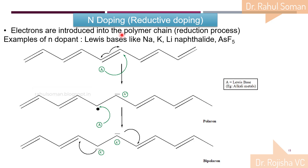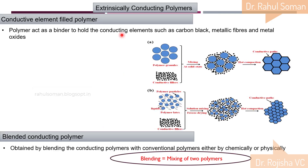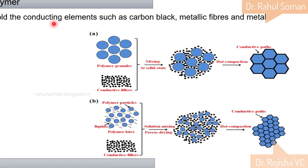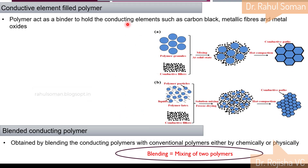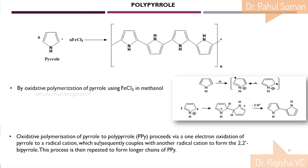So doping can improve the conductivity of polymeric material, and the concepts of polaron and bipolaron are very important — this has been asked in previous exams. So far we have seen intrinsically conducting polymers, which require alternating single and double bonds; dopants are added to enhance conductivity. The other main classification is extrinsically conducting polymers, where conductive fillers are added to create conductive paths in the polymer, or two polymers — one conducting and one non-conducting — are blended together.